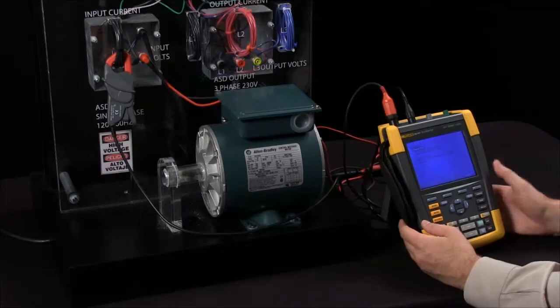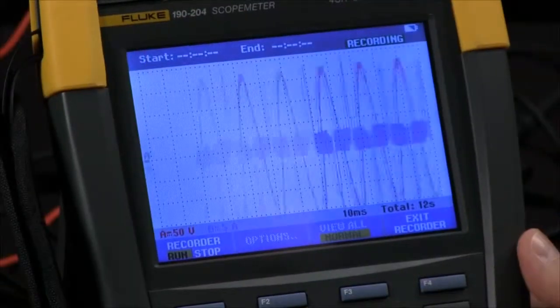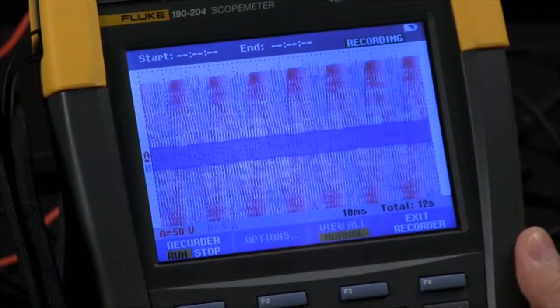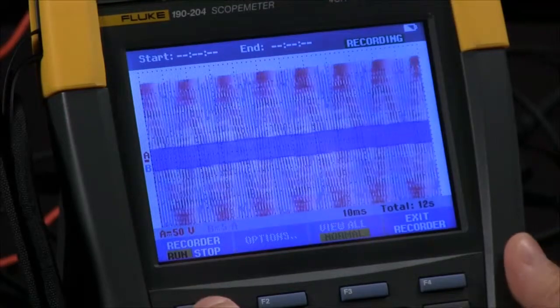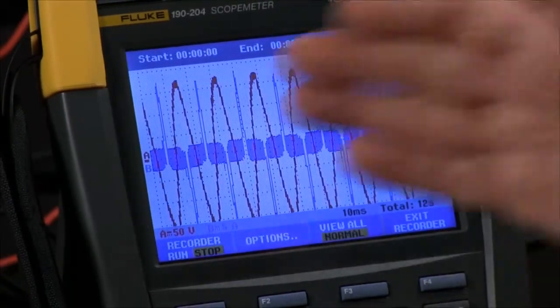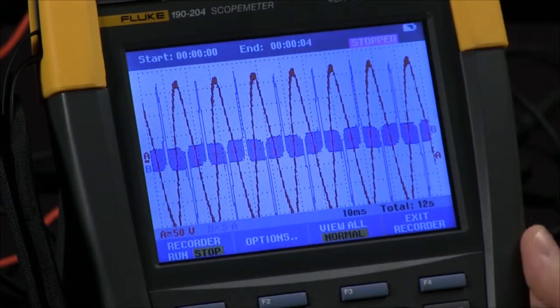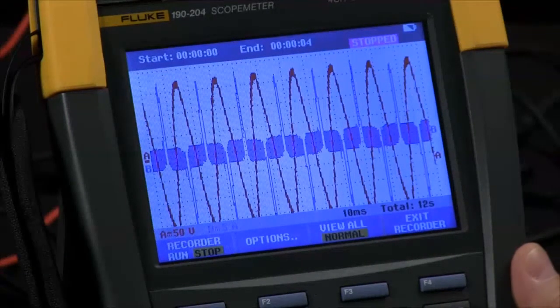We can also go back and do a scope record by selecting that. We are now tracing across the screen. I can stop that and now we can see that there is the waveform saved into deep memory and is frozen on the screen.